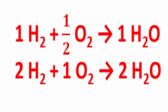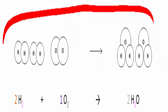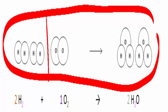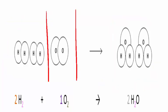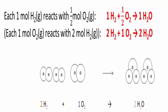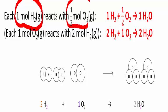Especially because the ratio doesn't only refer to molecules — as shown in the picture where we have two hydrogen molecules for one oxygen molecule to produce two water molecules — but it also refers to any factor of these numbers of molecules, for example groups of moles. Then it does make sense to say one mole of hydrogen gas reacts with half a mole of oxygen gas to produce one mole of water. You do get such a thing as half a mole; you don't get such a thing as half a molecule.